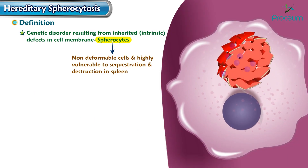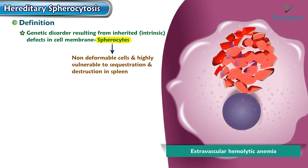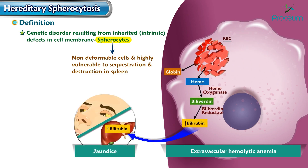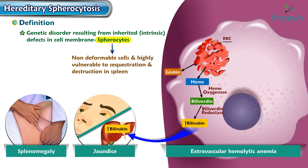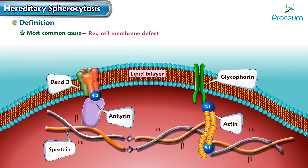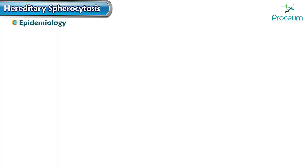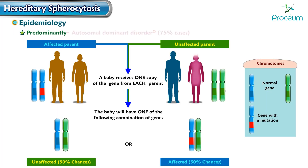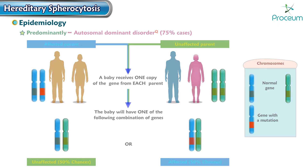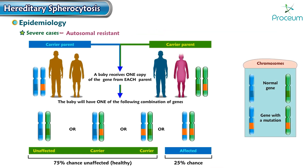This ultimately causes extravascular hemolytic anemia, jaundice, and splenomegaly. It is the most common cause of hemolytic anemia due to a red blood cell membrane defect. Regarding epidemiology, hereditary spherocytosis is predominantly an autosomal dominant disorder, though some severe cases are autosomal recessive.